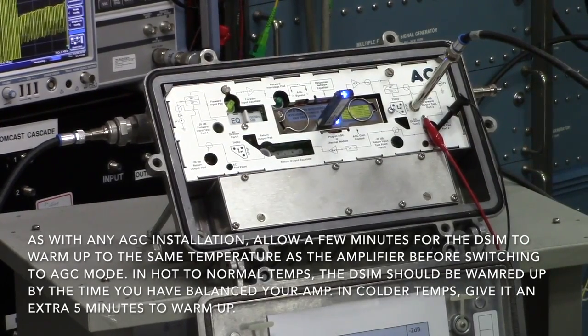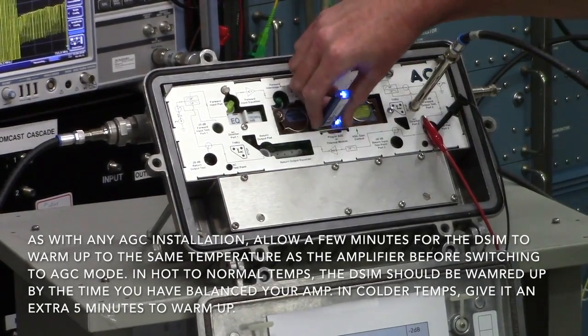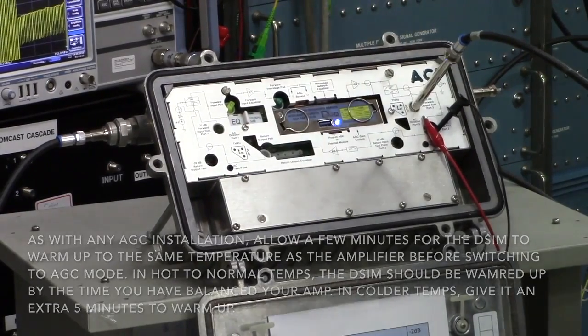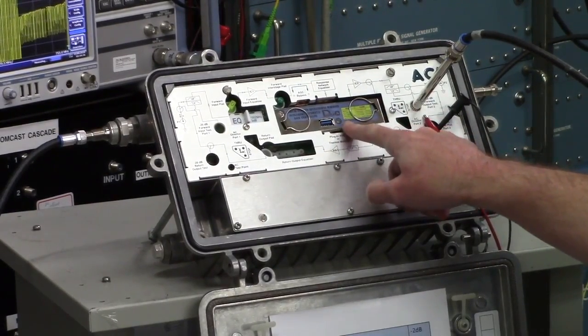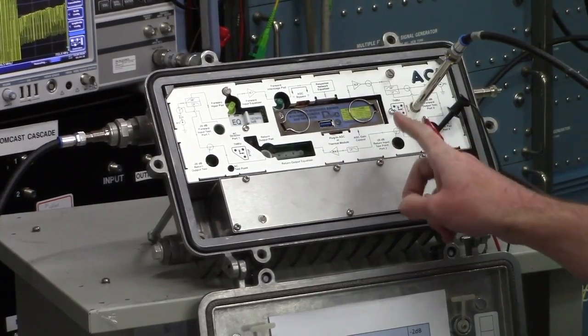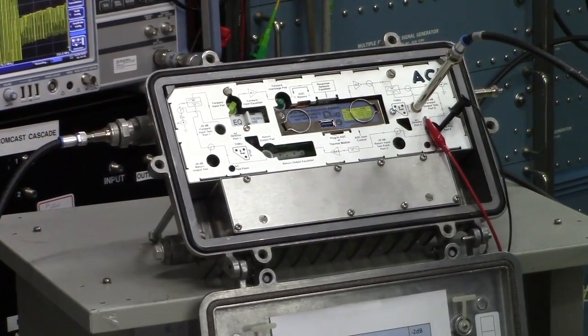Now it's entered AGC mode. You can pull the controller out. If you look at the DSM LED, instead of a steady flashing blue, you'll see a pattern.